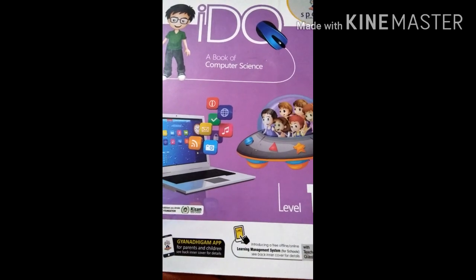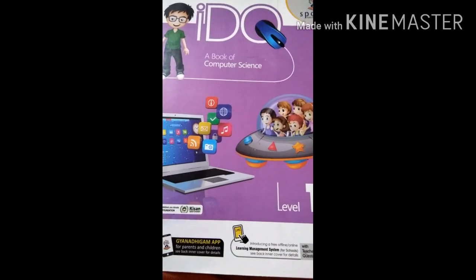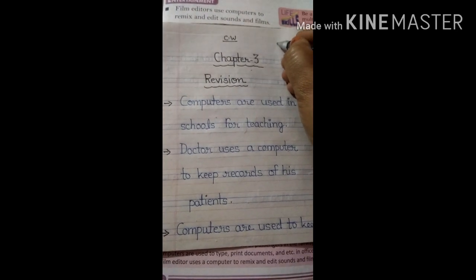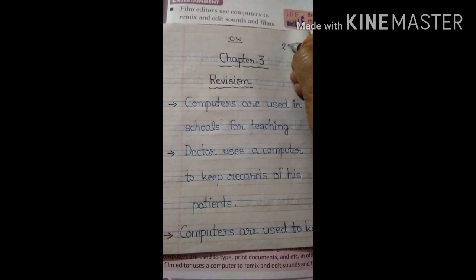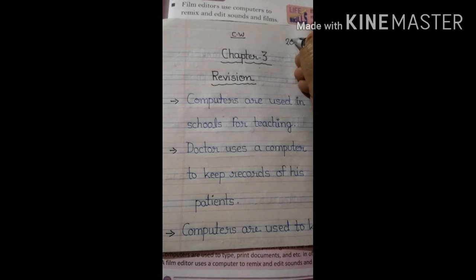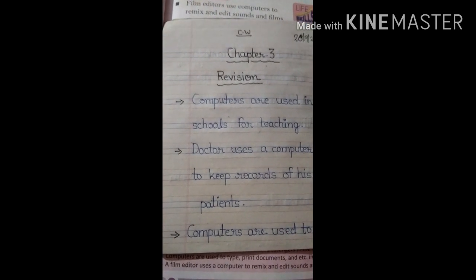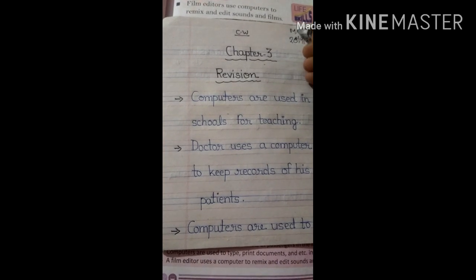Now take out your book and open chapter 3. Take out your date. First of all you have to write the date 28, 9, 2020 and day, Monday.